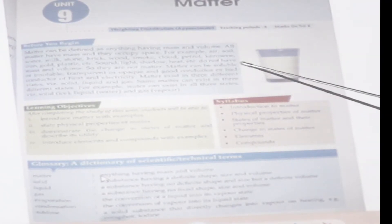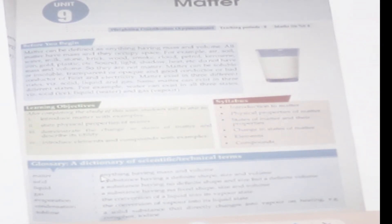Matter can be soluble or insoluble. Soluble means which can dissolve into the water, and insoluble means the substance which cannot dissolve into the water. Matter can also be transparent or opaque, and a good conductor or bad conductor of heat and electricity. Transparent means which allows light to pass through to see behind the object, and opaque means which cannot allow light to see what is behind the object. Good conductor means which can pass electricity, and bad conductor means which cannot pass electricity.